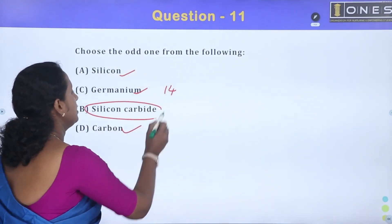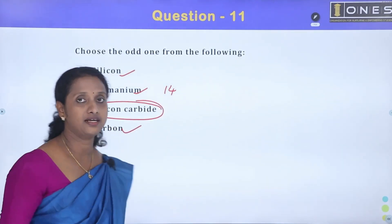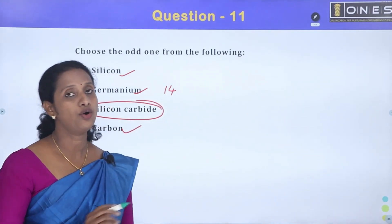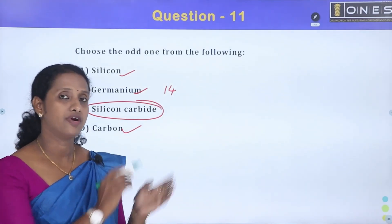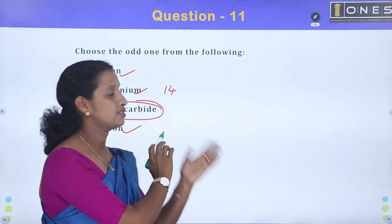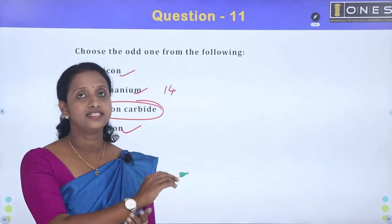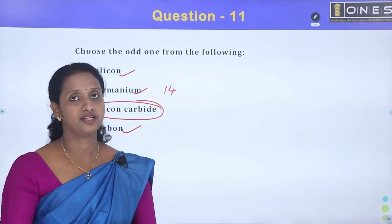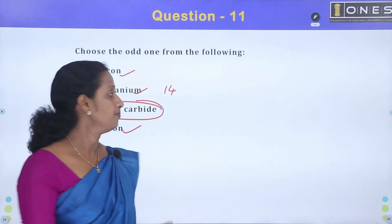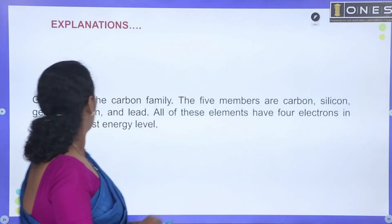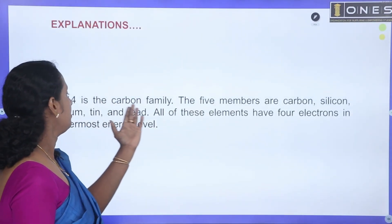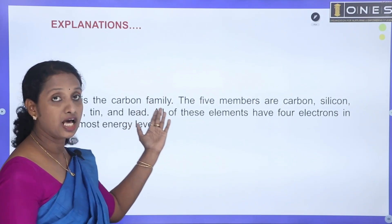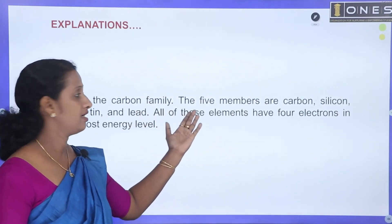Silicon Carbide is one of the odd ones. This is a simple question. The group is 14. That is the carbon family.